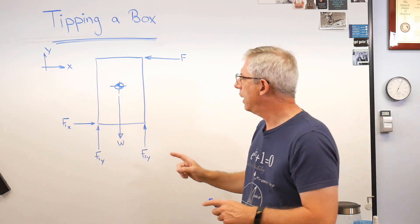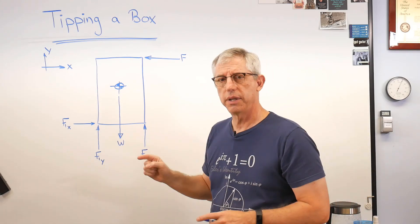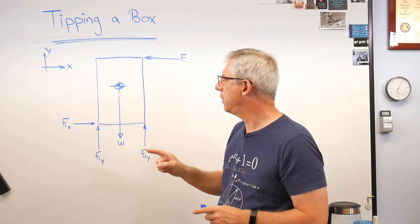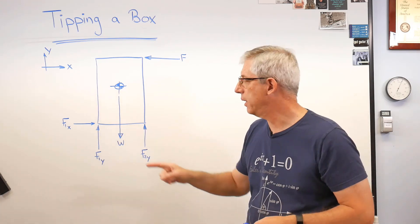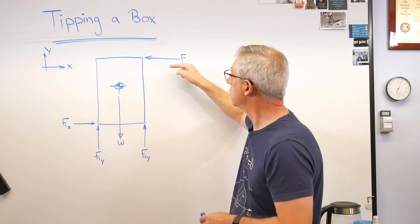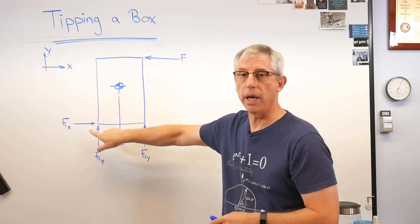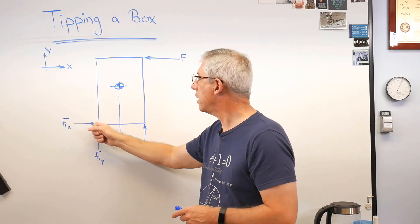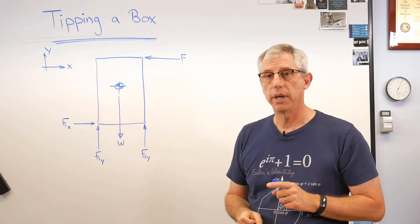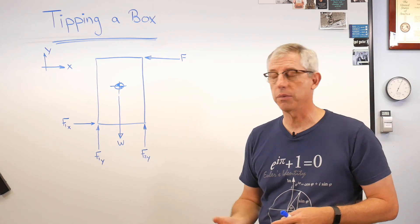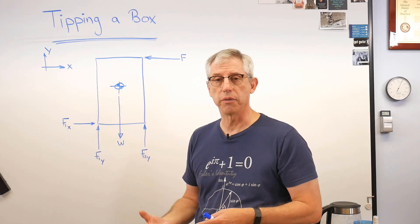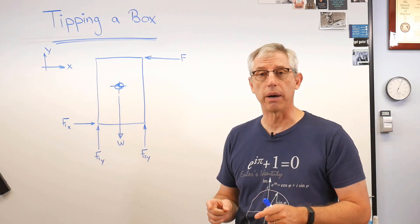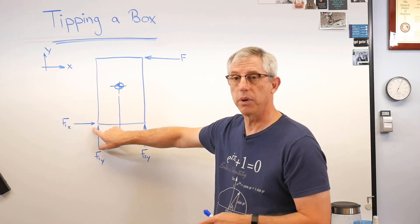Well, if the box starts to tip, when it just starts to tip, it's up on one edge, either this one or this one. Now, because the force is going to the left, it'll be this edge. And when that happens, the entire weight of the box is being borne by that one edge. Well, I don't care about the condition where it's just sitting vertically on the floor. I care about the condition where it's about to tip.